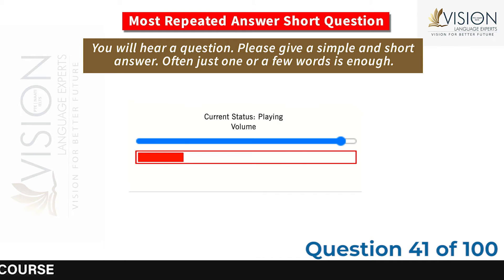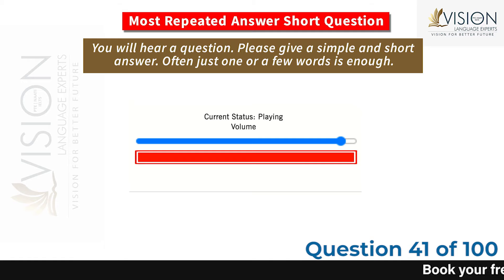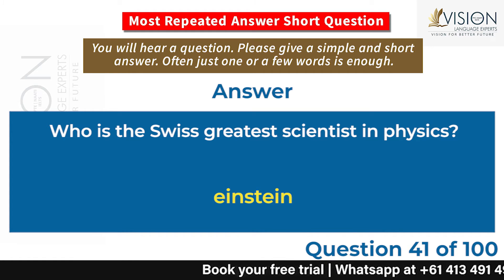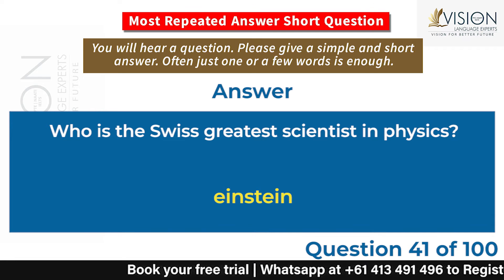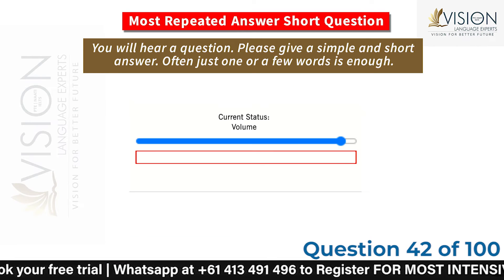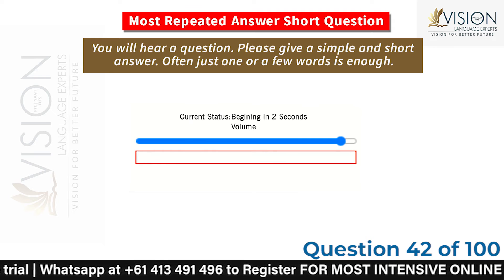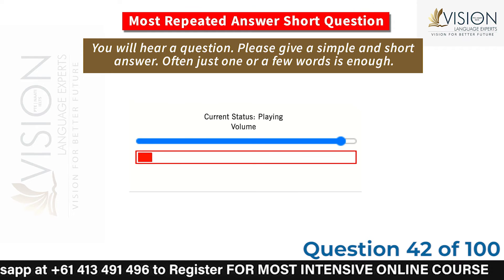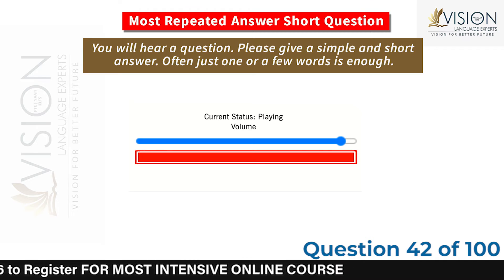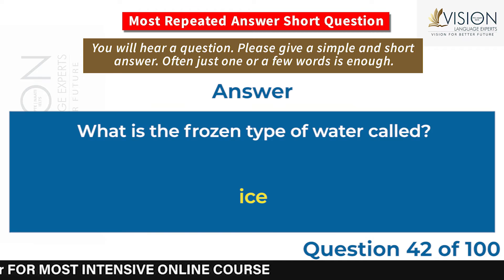Who is the greatest scientist in physics from Switzerland? Einstein. What is the frozen type of water called? Ice.